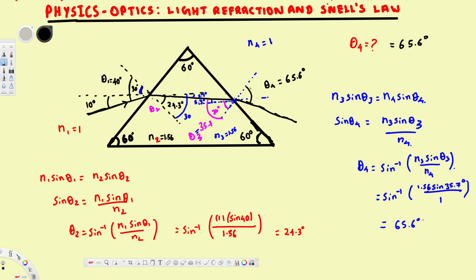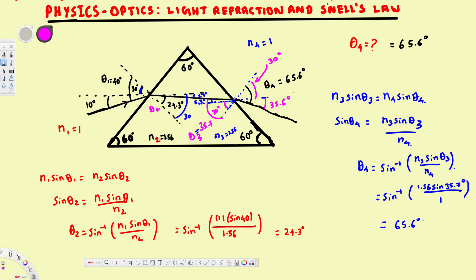Since theta 4 is 65.6 degrees, and the extended line makes 30 degrees on the other side, this other angle is also 30 degrees. So if the total is 65.6 and this part is 30, the remaining angle is 35.6 degrees. That's how we solve this type of prism refraction problem.